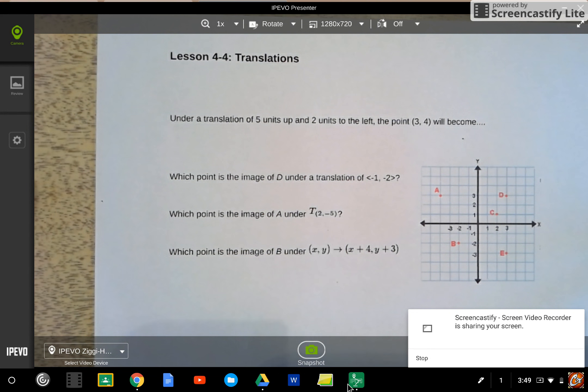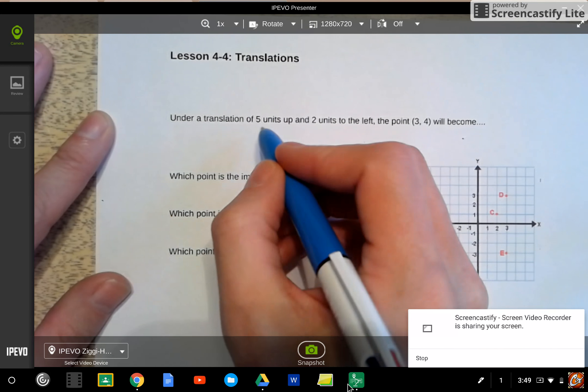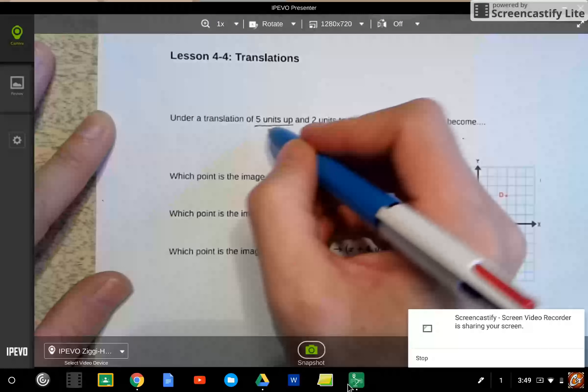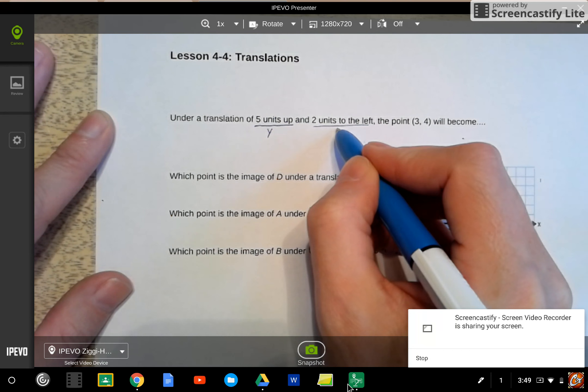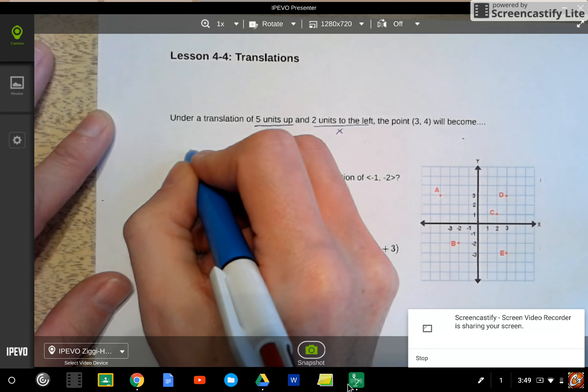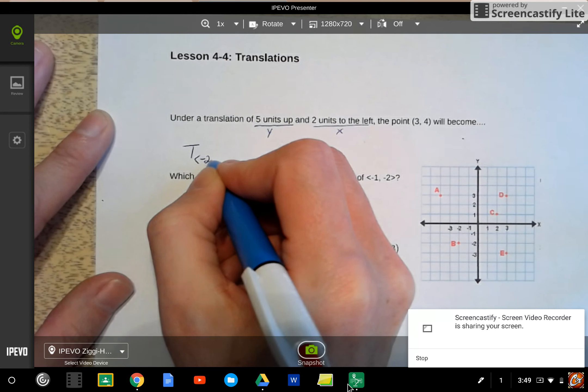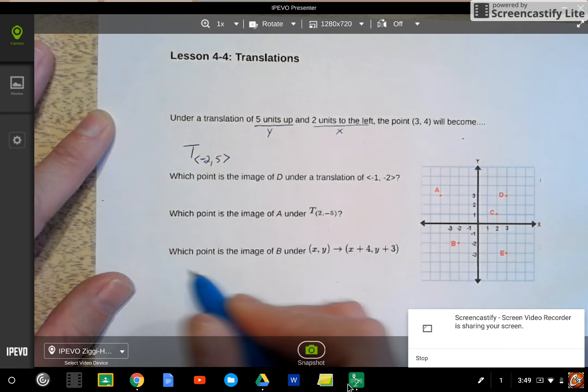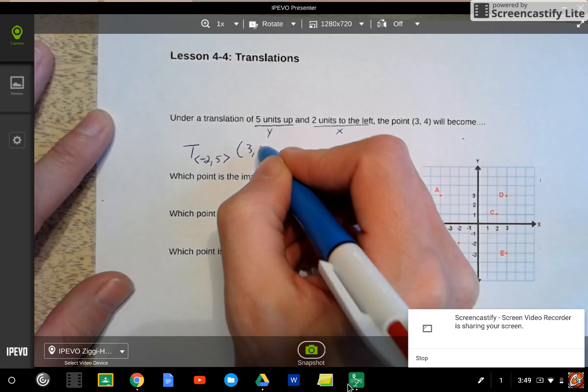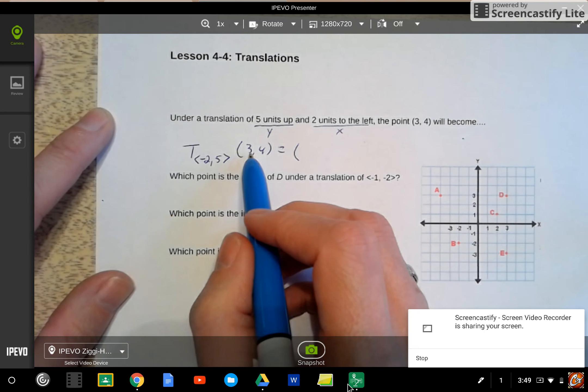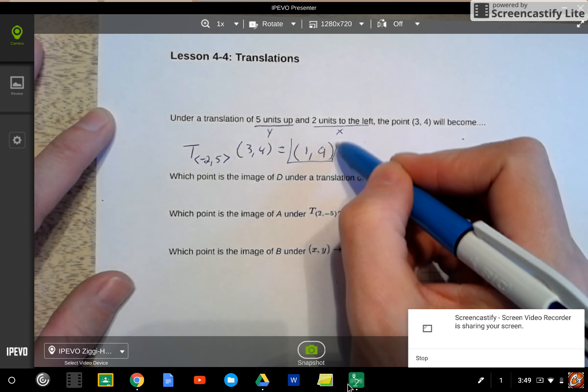So coming back and looking at this. Be careful. You may have gotten tripped up by this one. 5 units up. Remember, up and down are along your y-axis. 2 units to the left, that's along the x-axis. So this is really a translation of left is negative, so negative 2, up is positive 5. Be careful. It's easy to miss that one. I was wanting to see how closely you were going to read this. So if you got this wrong, don't worry about it. Just don't do that again. So that's going to be (1, 9). There's your solution.